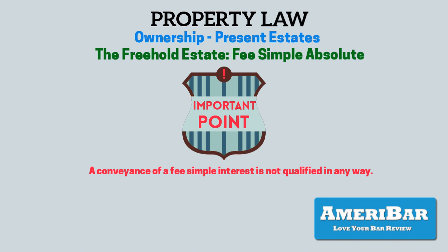Going back to the bundle of sticks analogy, a grantee obtaining property in fee-simple absolute is given control of the entire bundle of sticks. Of course, that owner can then give some of the sticks or rights in the property to other people, such as tenants, mineral rights holders, or licensees. But at least initially, the owner of a fee-simple absolute is given control of the entire bundle of sticks.